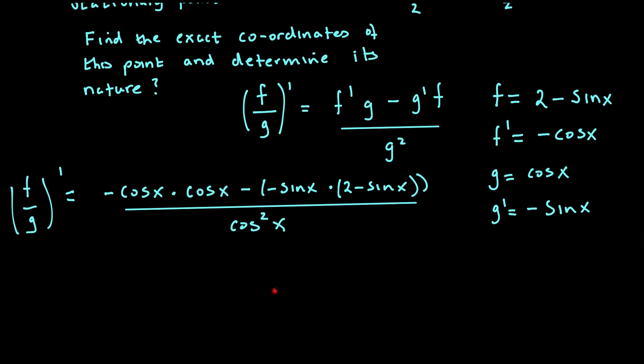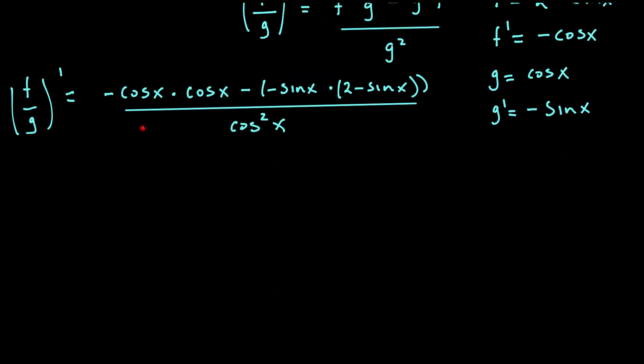Now if I tidy this up, that would give me -cos x times cos x, which is -cos²x, and that would give me +2sin x - sin²x, all over cos²x.